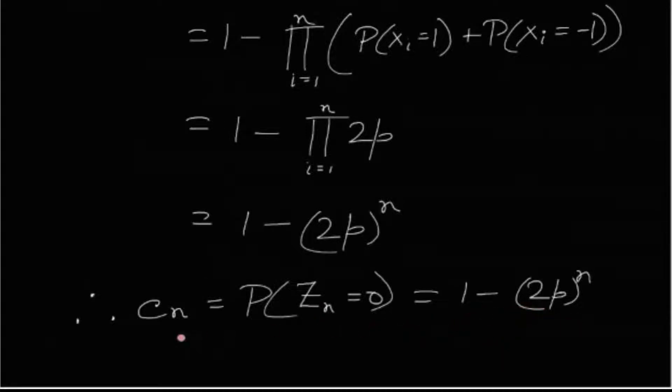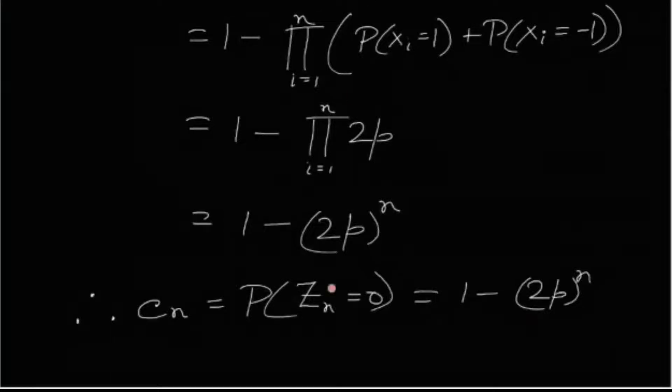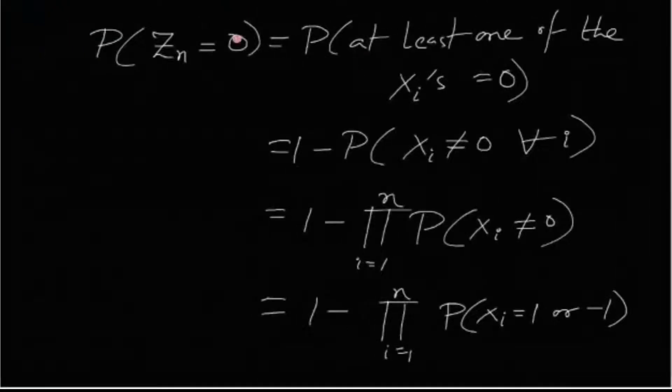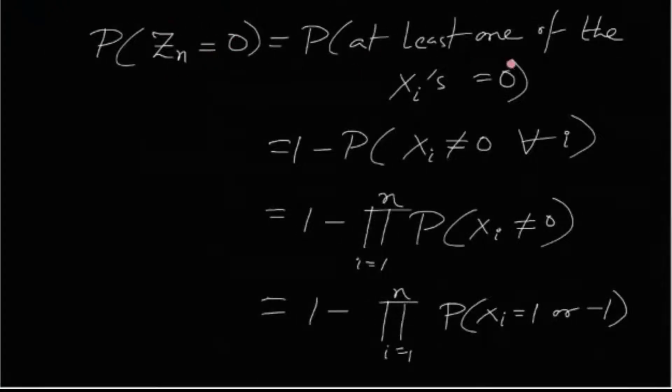So we have already found out the value of cn. Now what about this? This was easy because this entire thing, zn is 0. If at least one of them is 0, then zn is 0. So we have taken the negation of this event because it's easy to do that.